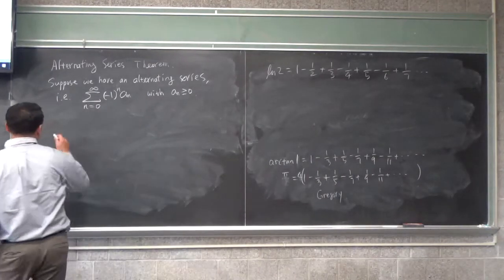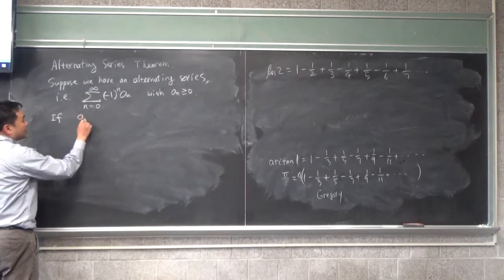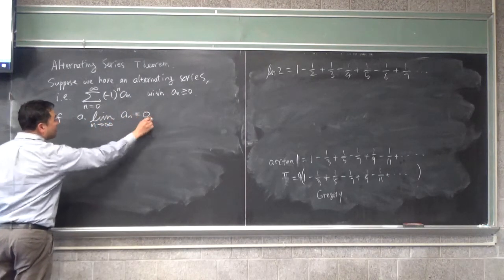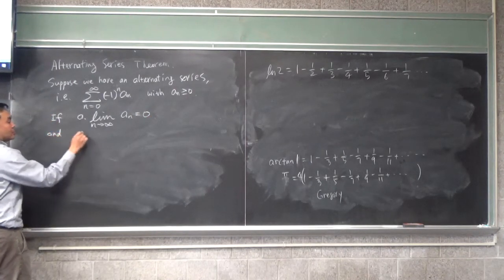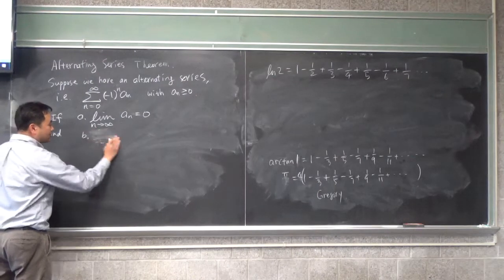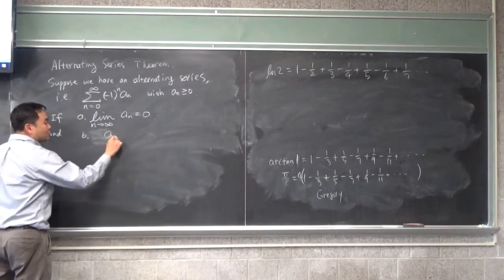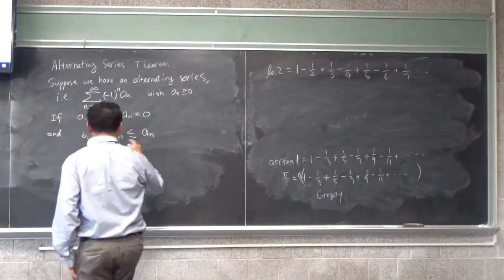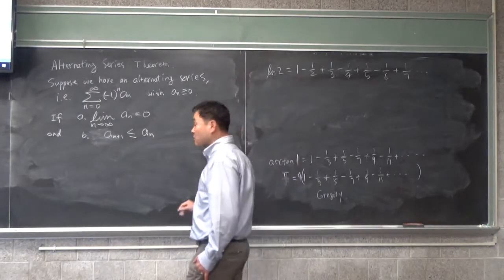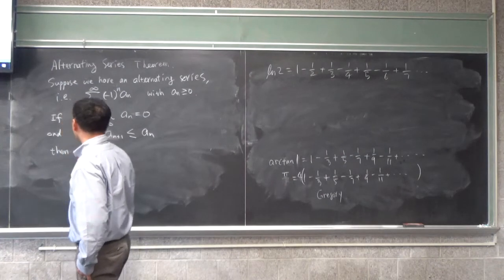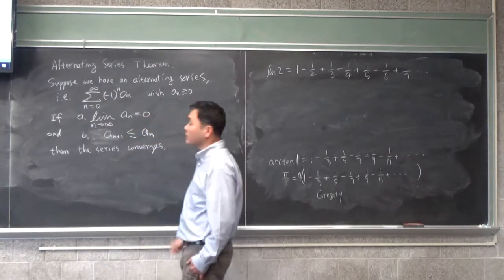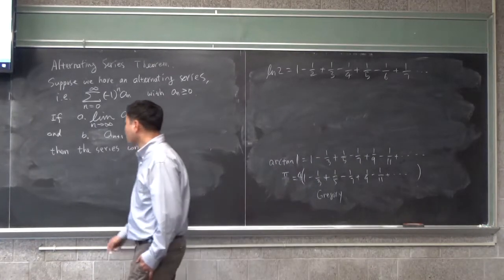We have two conditions. If number one, limit n going to infinity of a_n is 0, and number two, if a_(n+1) is less or equal to a_n, in other words, the terms have to become smaller and smaller. If these two conditions are met, then the series converges. That's a theorem about alternating series.